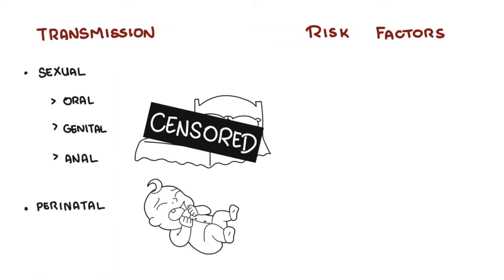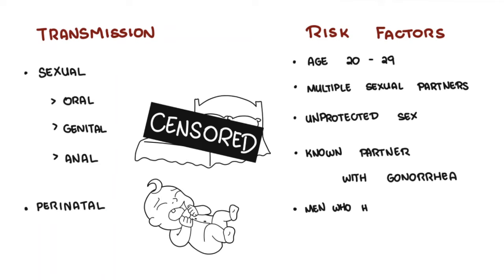Risk factors for Neisseria gonorrhea infection include age 20 to 29, having multiple sexual partners, having unprotected sex, having known partners with gonorrhea, men who have sex with men, and current or prior history of sexually transmitted infections.